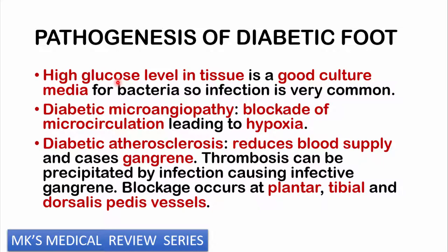Another factor is diabetic microangiopathy — a problem affecting the small blood vessels. High blood glucose levels cause non-enzymatic glycosylation, where the endothelium begins to attach to glucose molecules, leading to endothelial dysfunction and damage. This results in deposition of fat and platelets in vessel walls, blocking microcirculation and causing hypoxia. Hypoxia impairs the inflammatory response, reducing the tissues' ability to respond to bacteria and infections.